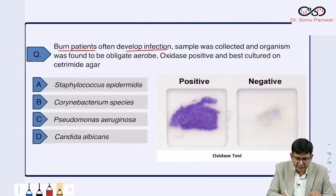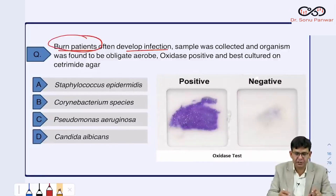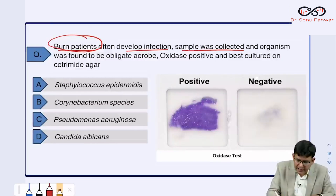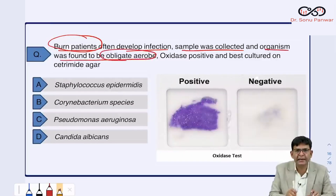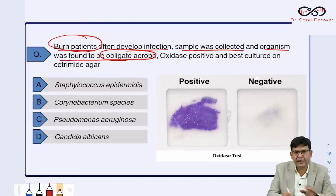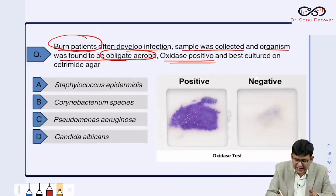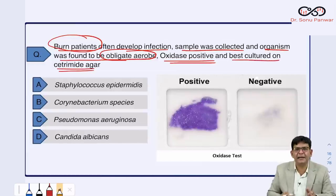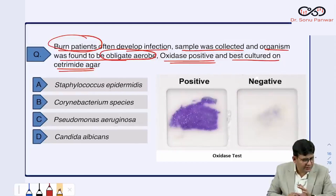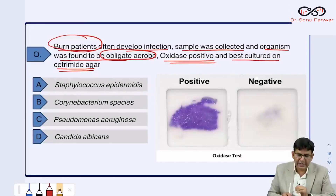Burn patients often develop infection. In this case, a pus sample was collected from a burn patient, and the organism was found to be an obligate aerobe, oxidase positive, and best cultured on cetrimide agar. The answer is Pseudomonas — confirmed by Dr. Middle, Dr. Bhavar, and Kishore, all of whom correctly answered C.